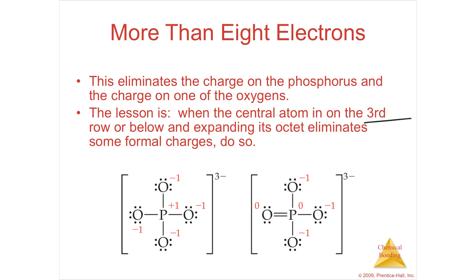So if you have atoms in the third row or below, like this phosphorus is in the third row, and expanding its octet eliminates some formal charge, then this is most likely what you're going to see. This would be the most preferable form, even though it breaks the octet rule.